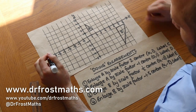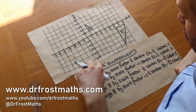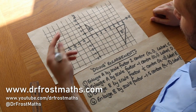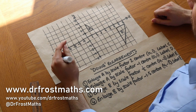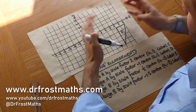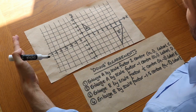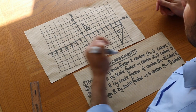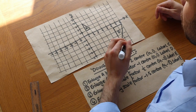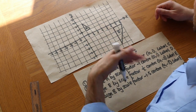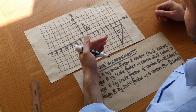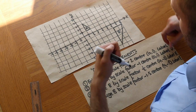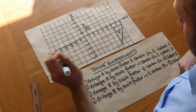Hello and welcome to this Dr. Frost Maths video on doing enlargements. In the video on describing enlargements we saw that enlargement was where we stretched or shrunk a shape — making it bigger or smaller — and even with a negative scale factor enlargement we could flip the shape around the centre of enlargement.